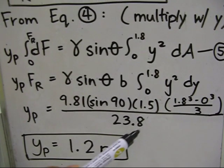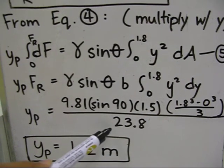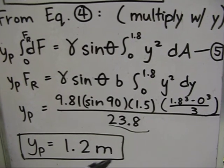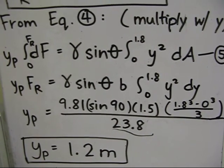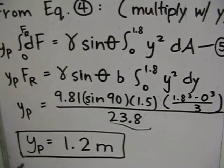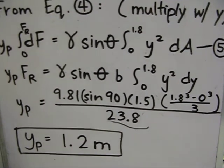Isolating Y-P, we will get the following equation, and after plugging in the values for the variables in the equation, which are all given in the problem, taking note that F-R is the F-R that we have just solved, which is 23.8 kilonewtons, we will get the final answer of 1.2 meters as our Y-P.